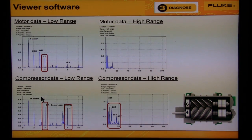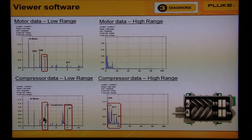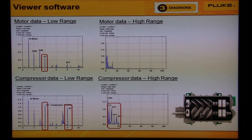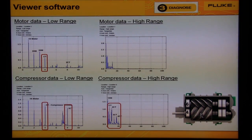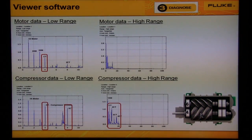In this example, we see a peak at 4x and a peak at 8x in the low range, but only on the compressor, not on the motor. If this data was from a screw compressor, then we have four screw threads. If the data was from a fan, then there are four fan blades. If the data is from a pump, then there are four impeller vanes.